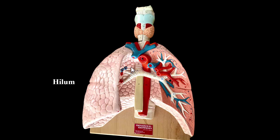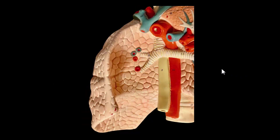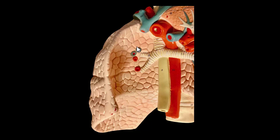Looking at this model, we can see the hilum. Rotating and zooming in, here is the hilum of the right lung. The hilum is the area where the pulmonary arteries and pulmonary veins enter and exit the lung, and also where the bronchi enter the lung. Right in here is the hilum, and you'd have the same on the left side as well.